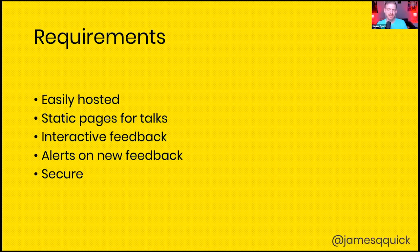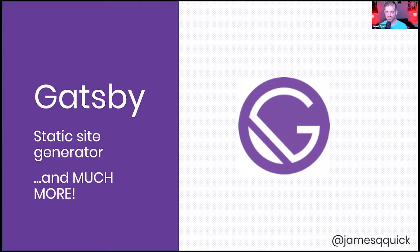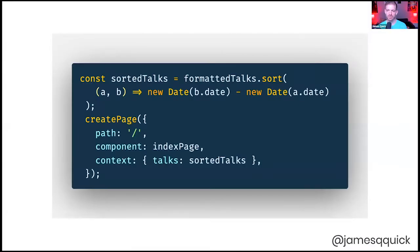Walking through the technologies used in this demo: first is Gatsby as the static site generator. At build time, I grab all the talks — all the information for each talk — and then for each one I create a static page. So at build time, I'm generating all the individual pages for the talks I've given.